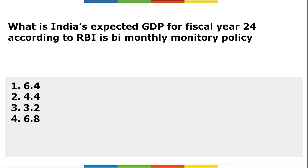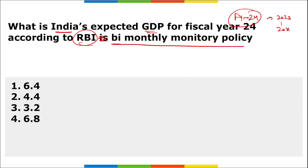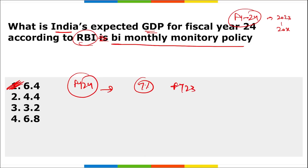Next: what is India's expected GDP for fiscal year 24? FY24 stands for 2023 to 2024. According to RBI's bi-monthly monetary policy, India is expected to grow at 6.4% for fiscal year 24. Remember, this is lower than the 7% growth rate recorded in fiscal year 23.